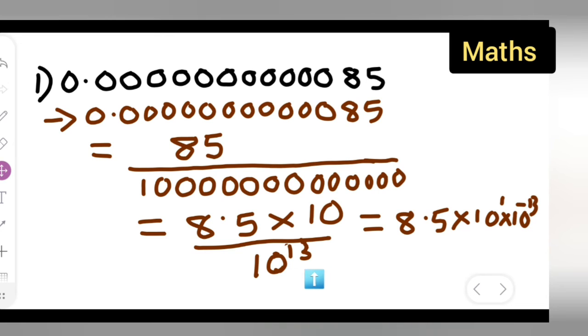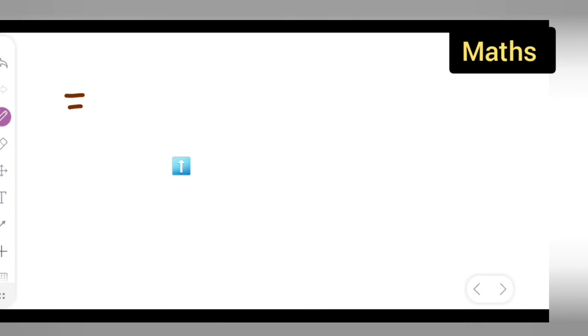Because when I take this here it will become minus 13. Reciprocal of this is minus 13. So write down this. So what answer you're going to get? 8.5 multiplied by 10 raised to power of minus 13.